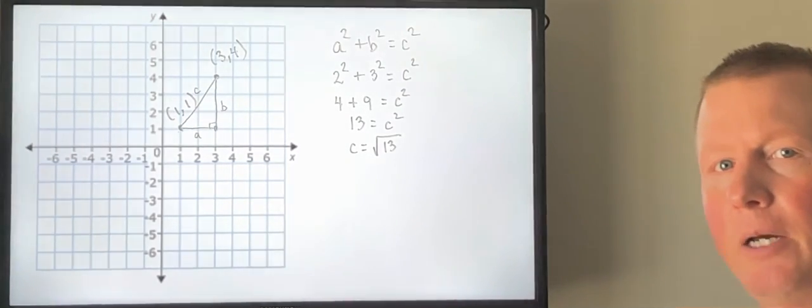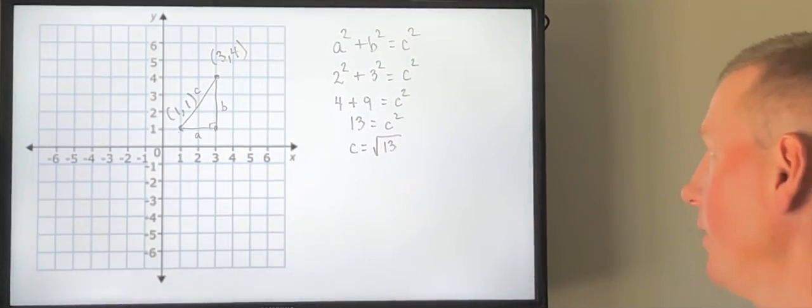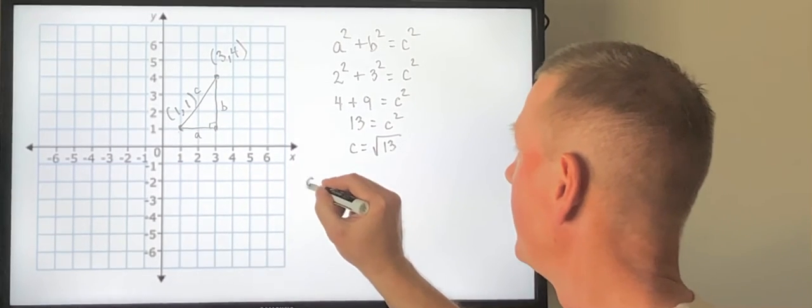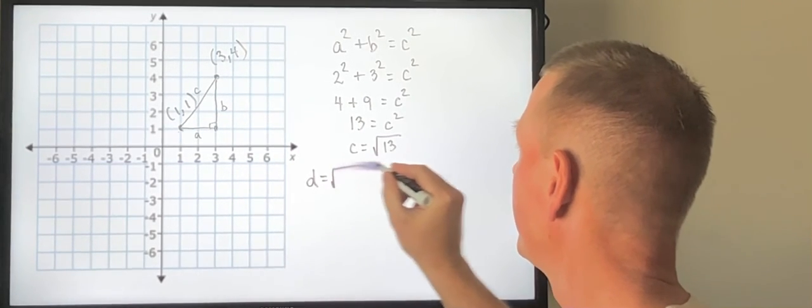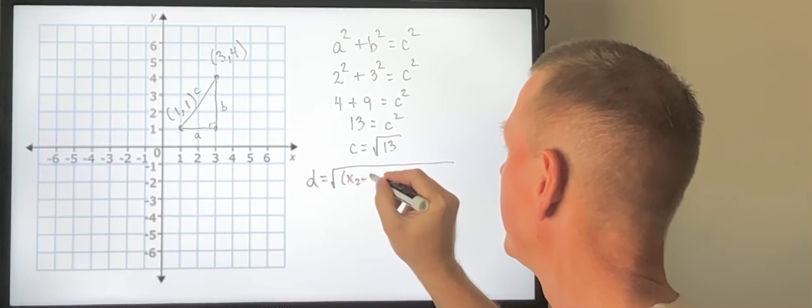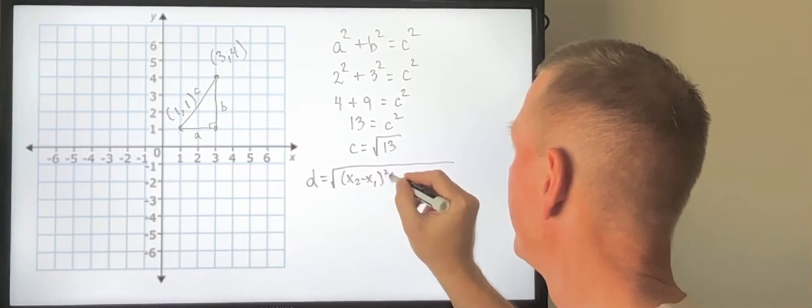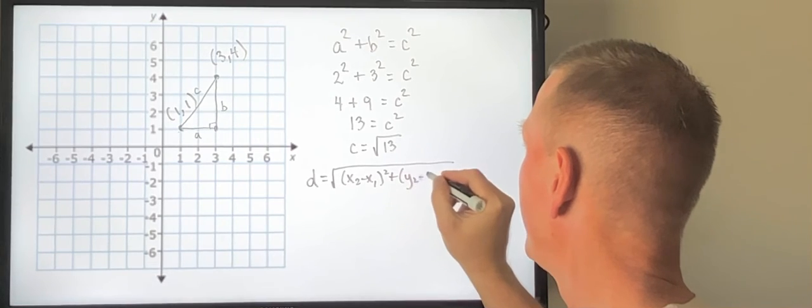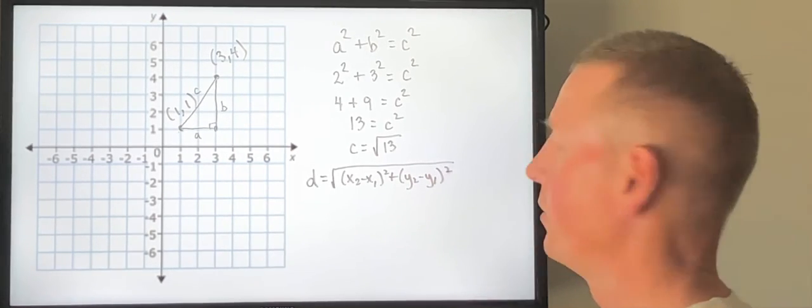Now the Pythagorean Theorem helps us to derive the distance formula. The distance formula states this: It is the square root of x₂ minus x₁ squared plus y₂ minus y₁ squared.